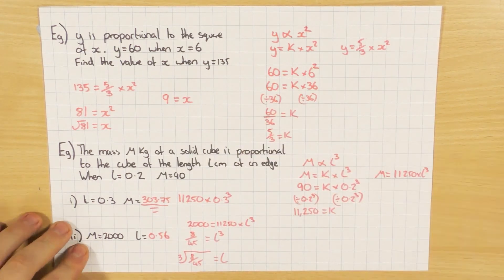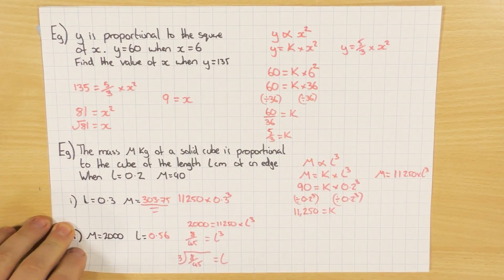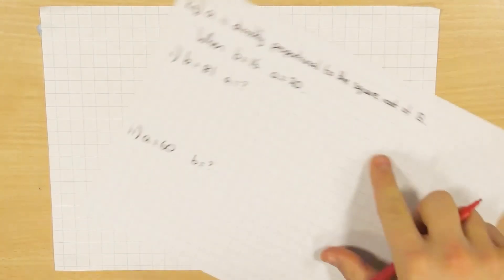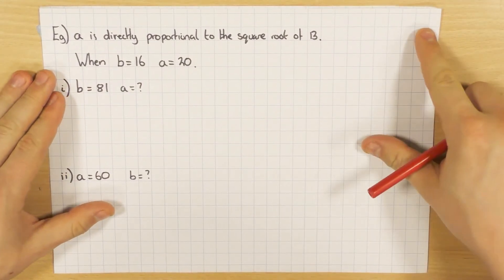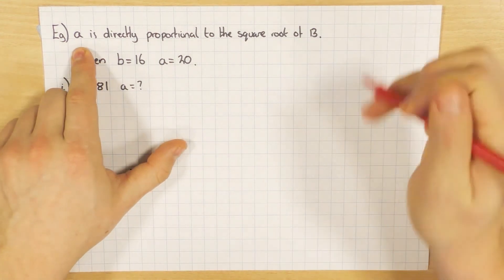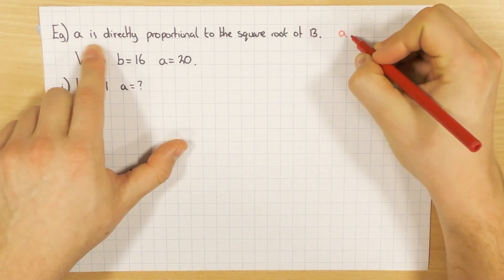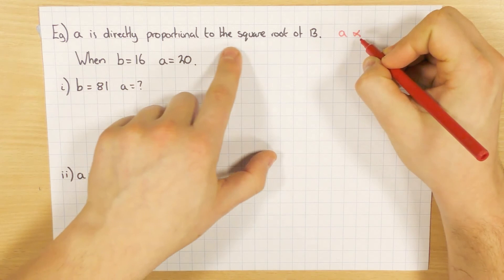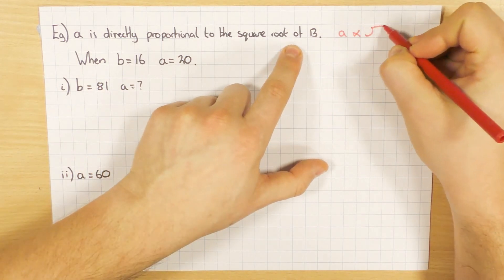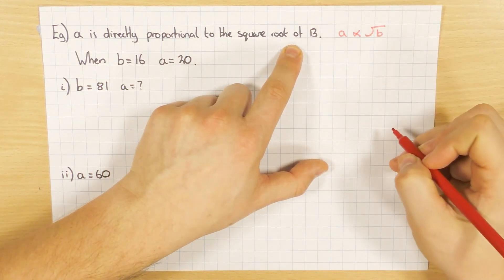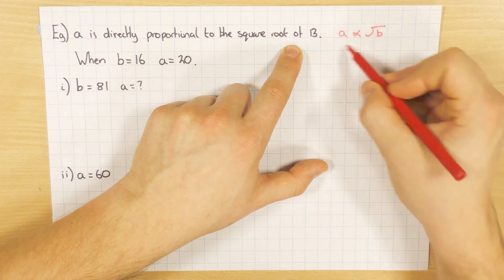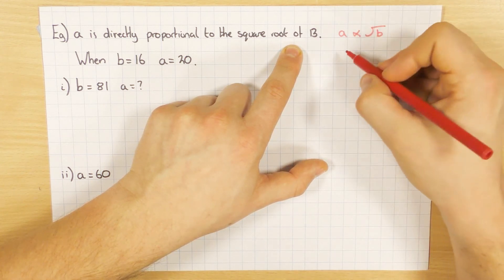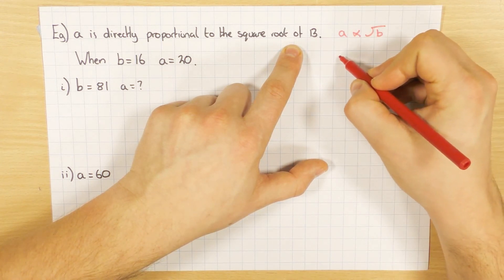And there's one more to have a look at. So just bear with me a second while I just get that sheet, which is this one here. So a is directly proportional to the square root of b. So that's the only bit that's different about this one. Make sure you set it up correctly. And then the next steps are exactly the same.